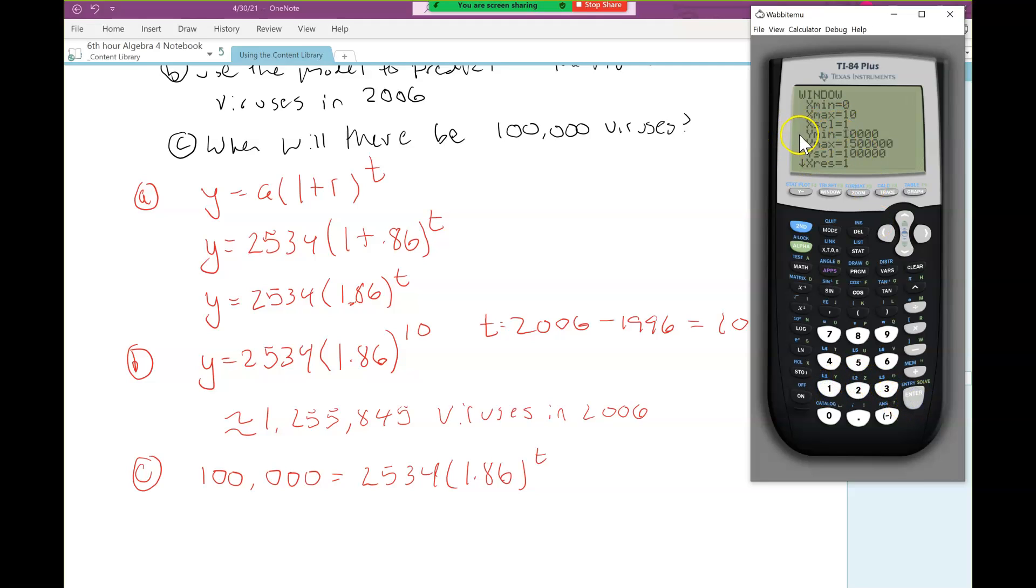Now the y's are representing the number of viruses. What's the minimum number of viruses? 2,534. I'm going to write that as 2,500 just because it's a round number. And the most number of viruses we can have? 1,255,000. I'm going to write that as 1,300,000. Going up by 100,000 seems like a good idea. I'm just going to hit graph.